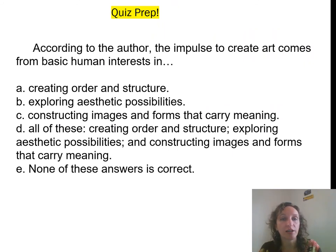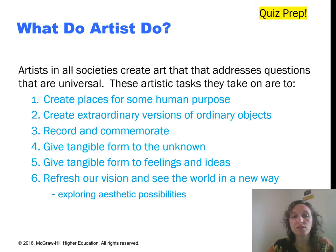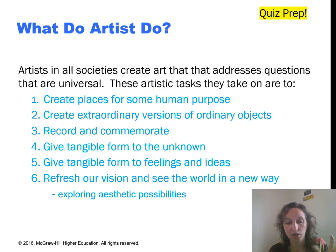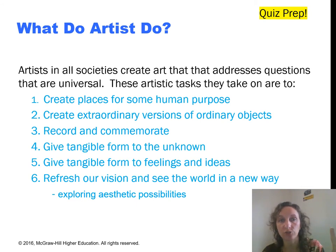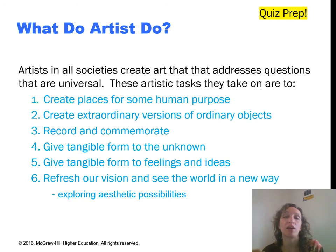According to the author, the impulse to create art comes from our basic human interests. Artists in all societies create art for similar reasons. Art looks very different across the whole spectrum of the world, but there are these six to eight or so core things that artists are trying to undertake whenever they make a work of art. We're going to look at a couple of these in more detail.